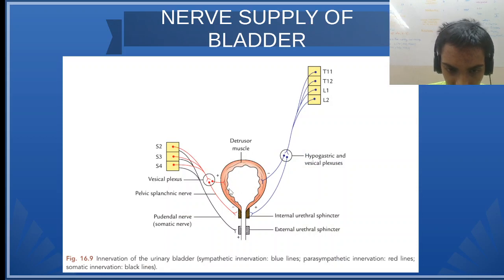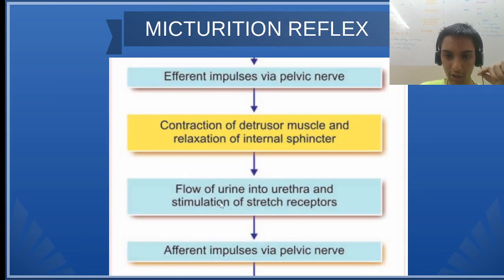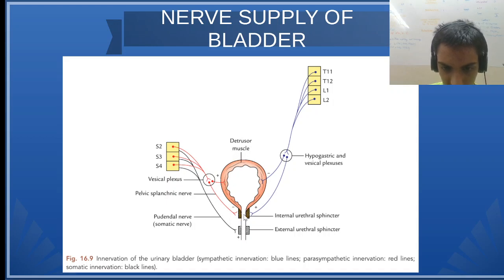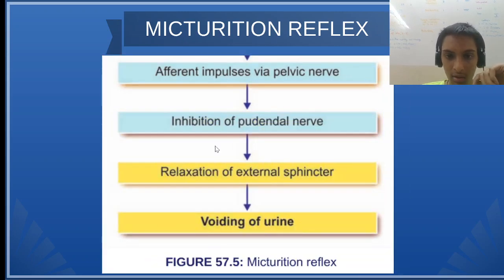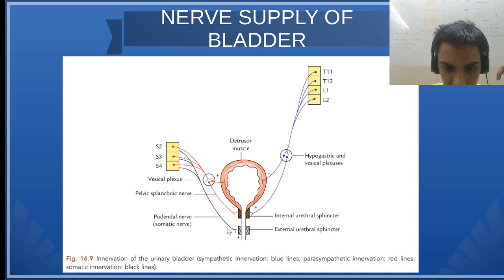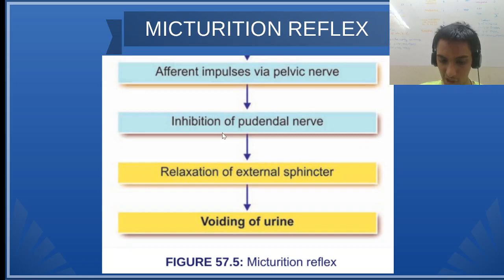With the efferent impulses, there is contraction of the detrusor and relaxation of the internal sphincter. Then there is flow of urine into the urethra and stimulation of stretch receptors there. Again, afferent impulses travel via the pelvic nerve, and there is inhibition of the pudendal nerve. This leads to relaxation of the external sphincter.